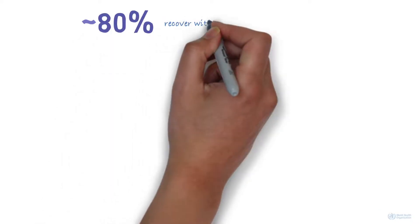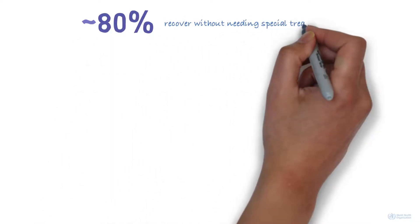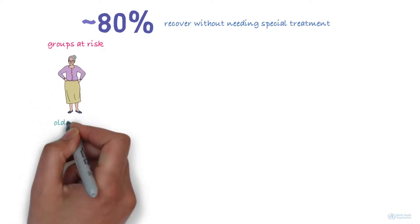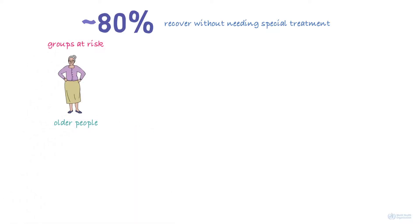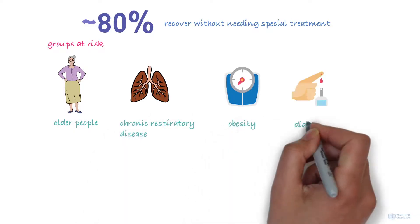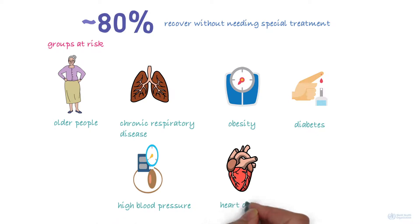About 80% of cases recover from the disease without needing special treatment. But there are some people who are at risk of serious illness. They include older people or people with underlying medical problems, such as chronic respiratory disease, obesity, diabetes, high blood pressure, heart disease, or cancer.